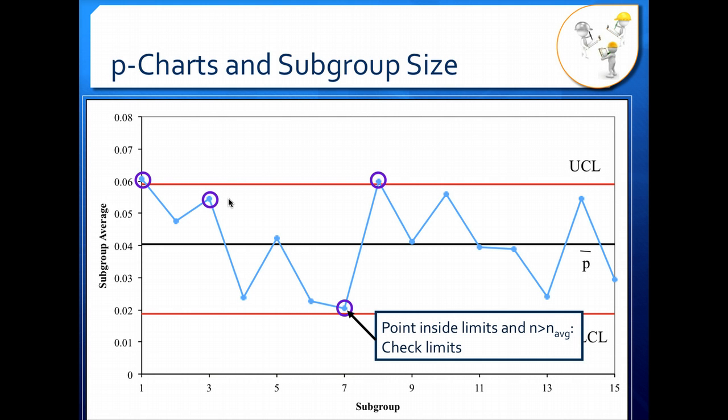Again, we want to check the limits and make sure the actual control limit is outside of our point here. In this case, if the point was where it was and our control limit was where the top of that dotted line was, our point is actually outside the control limits even though it looks like it's inside the average control limit.